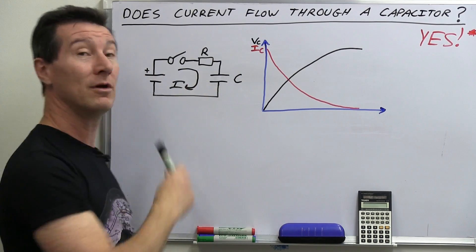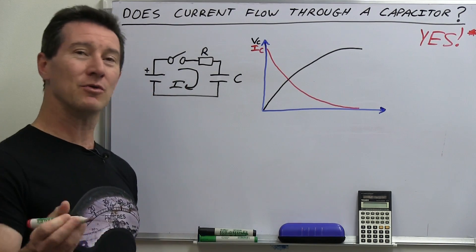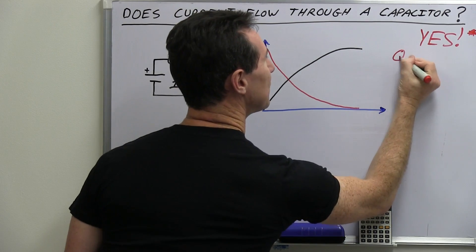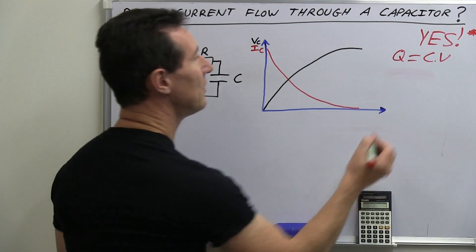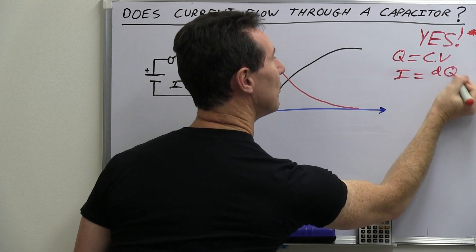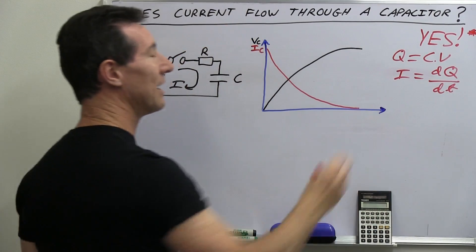And of course you've got some standard formulas you learn in electronics 101 to go along with this. Charge q equals c times v, and then you've got i equals dq, or the change in the charge, over dt, the change in the time.